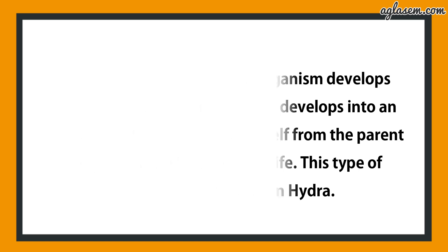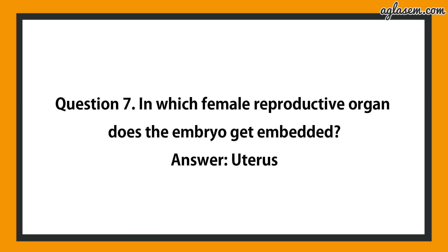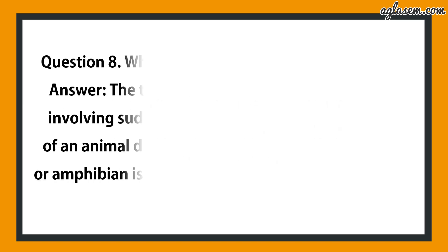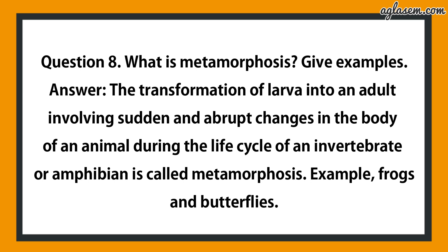Question number 7 says: in which female reproductive organ does the embryo get embedded? The answer is the uterus. Question number 8 says: what is metamorphosis? Give examples. The transformation of larva into an adult involving sudden and abrupt changes in the body of an animal during the life cycle of an invertebrate is called metamorphosis. For example, frogs and butterflies.